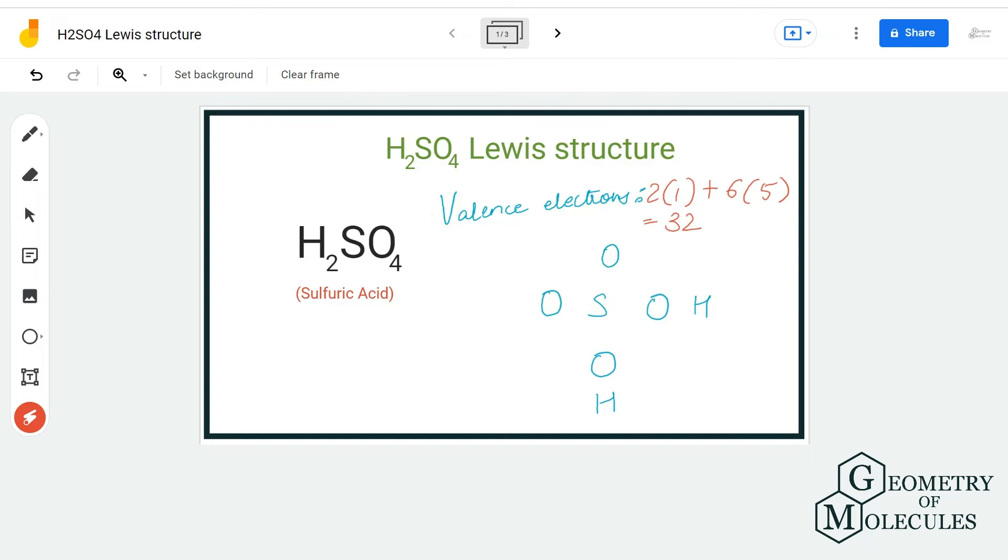Once we know the total number of valence electrons, it becomes really easy to find out the arrangement and the placement of electron pairs for bond formations. Here I am going to place the sulfur atom in the center, and all the oxygen atoms will be placed around this atom, and hydrogen atoms will be placed next to oxygen atoms like this.